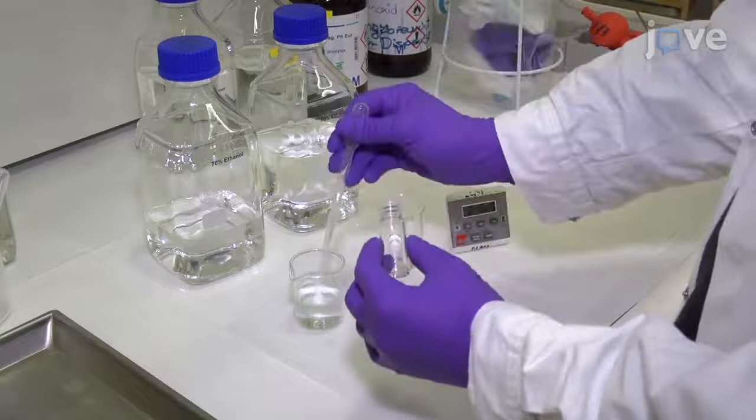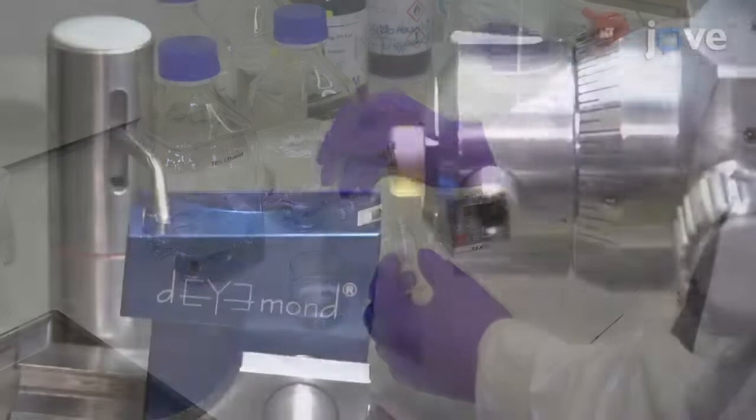Then, place the sample onto an ultramicrotome and produce 55nm ultra-thin serial sections. Place the sections on a slot grid with dimensions of 1 mm by 2 mm coated with Formvar.